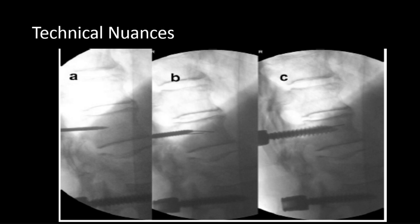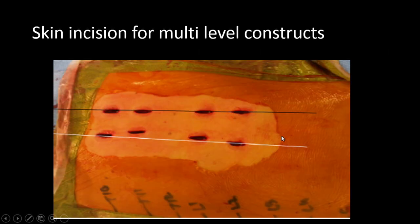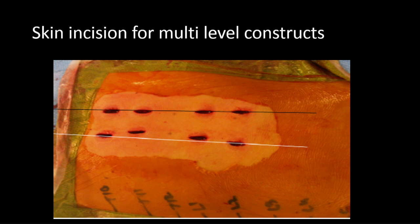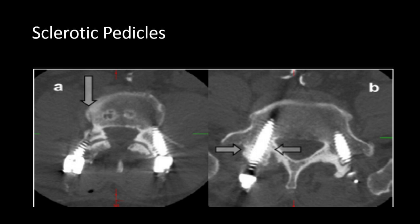Technical nuances: this is how the cannulated screw appears on the x-ray, and these are the incisions - very small. If you're doing guide wire placement, you just have to join these two incisions as Dr. Vijay was saying, and it's ready for a mini open approach on either side when needed. For sclerotic pedicles - if you have a thin or sclerosed pedicle - you might want to take the screw from outside-in, bypassing or going through the pedicle, to ensure there is no medial breach.